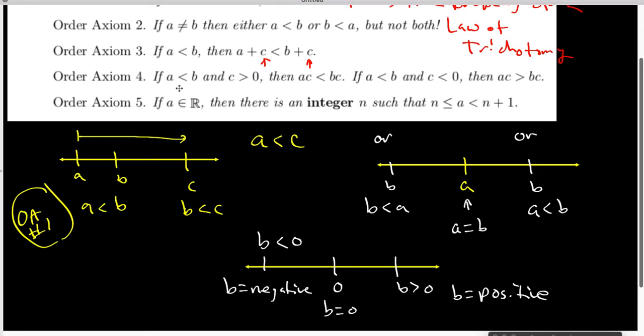The fourth axiom says that if we're going to multiply an inequality by a number, we need to know whether or not the number we're multiplying by is positive or negative. If the number we're multiplying is positive, then the inequality stays the same. If the multiplier is negative, the inequality gets flipped.